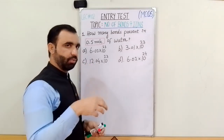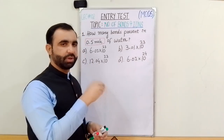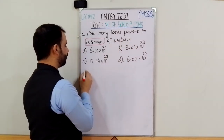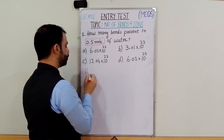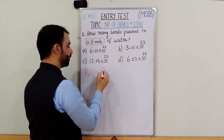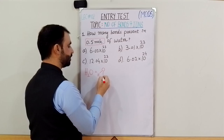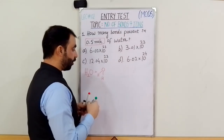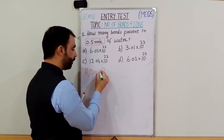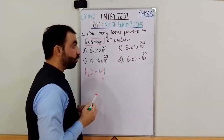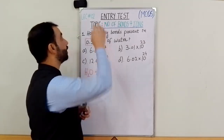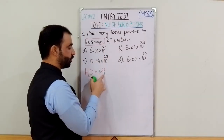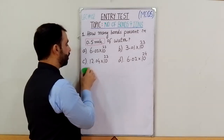We asked: 0.5 moles of water molecule — how many bonds will be found? First of all, you have the formula of water and the structure of water. The formula of water is H₂O. When we draw the structure, we can count how many bonds there are. There are 2 bonds in one molecule of water.